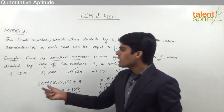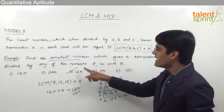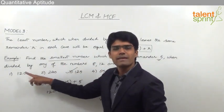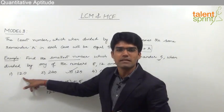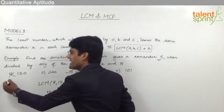For example if we try to take option number 1, when option number 1, 120, is divided by 8 we know that 120 by 8 is exactly 15. There is no remainder but we want the remainder to be 5. So option 1 gets cancelled.